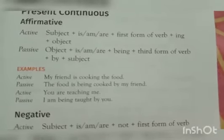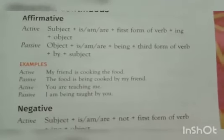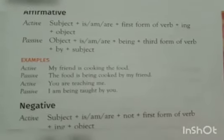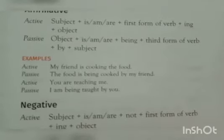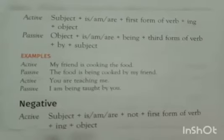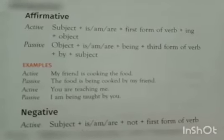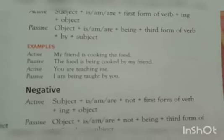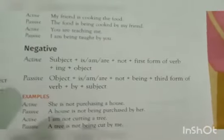'You are teaching me' becomes 'I am being taught by you.' You can see that in passive form the word 'cooking' becomes 'being cooked' and 'teaching' becomes 'being taught.' This means when writing the passive form, there is no need for the verb with -ing; we have to use the third form of the verb.